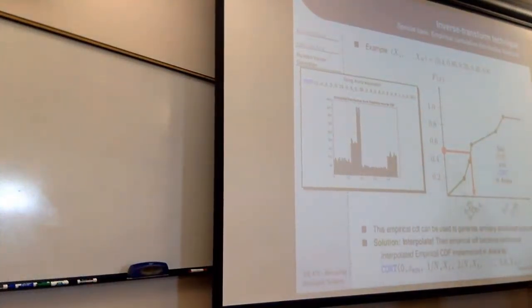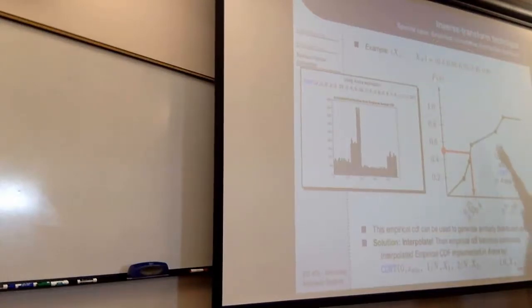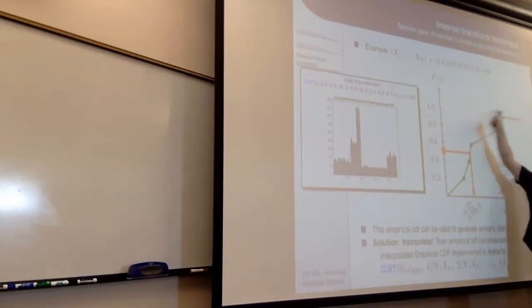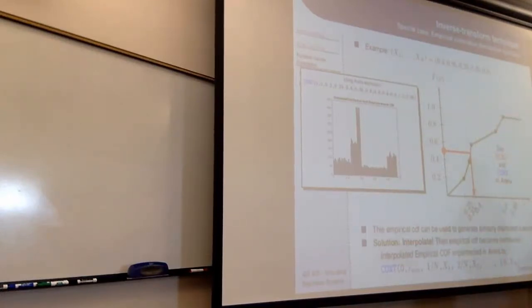So that's DISC and CONT. CONT is just a way to smooth out DISC if all you have is a small number of data points assumed to come from a continuous distribution but you can't fit it to a known distribution.